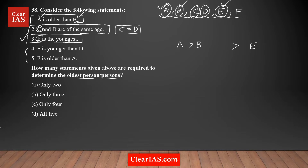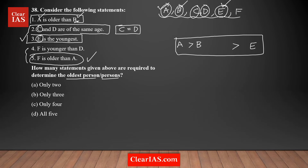There are two statements left: four and five. Statement 5 says F is older than A, which establishes a connection between F and the existing relationship chain. So now F is older than A, and one more person is included in the ordering.